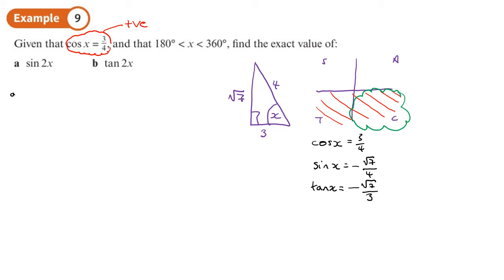Right, so all we need to do now is plug these into our thing. sin 2x is 2 sin x cos x, so that's going to be 2 times sin x is negative root 7 over 4 times by cos x which is 3 over 4. So that's going to give me negative 6 root 7 over 16, which will simplify, divide both of those by 2, negative 3 root 7 over 8 as the exact value of that.